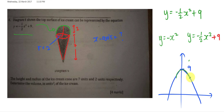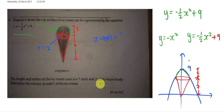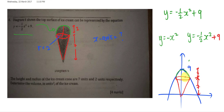So the ice cream is somewhere here — the curved surface is on top and then you have a cone below it. The distance from the base to the top of the cone is seven units, and the radius is two units on each side. Seven plus two equals nine, which matches perfectly. I'm assuming the top is a hemisphere, because otherwise there's no way to do this question.